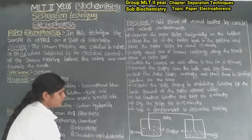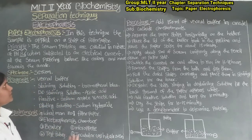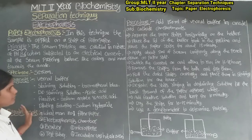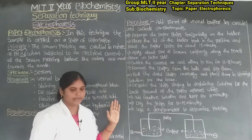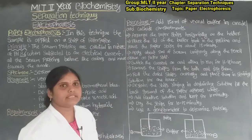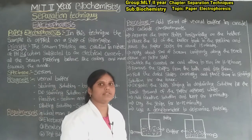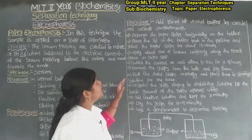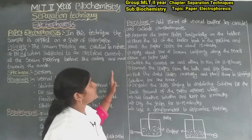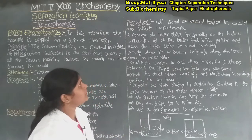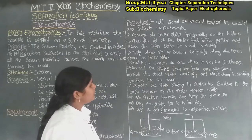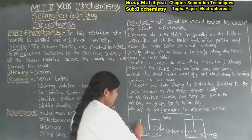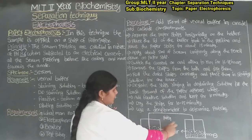Now the procedure — how we perform the test or how we use the electrophoresis. First point: add 150 ml of veronal buffer in the anode and cathode compartments. The electrophoresis chamber has two compartments — two box-like sections — and we fill these compartments with veronal buffer solution, 150 ml, up to half level.